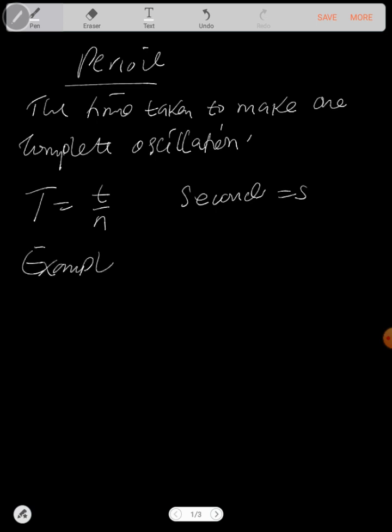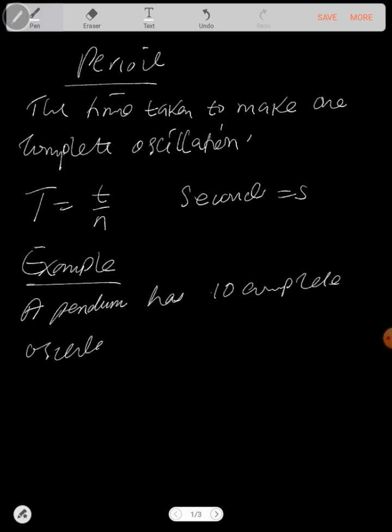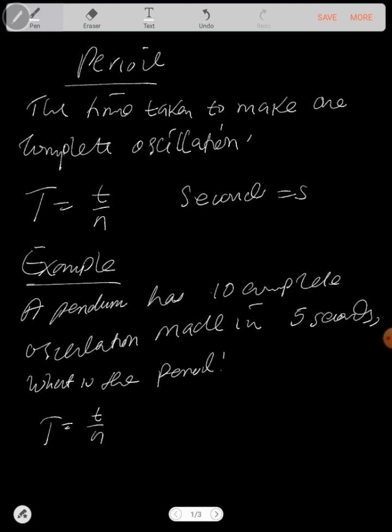You can look at an example. A pendulum has 10 complete oscillations made in 5 seconds. What is the period? Period equals time taken over number of complete oscillations. The time taken is 5 seconds, while the number of complete oscillations is 10. So this will give you 1/2, which gives you 0.5 seconds. That's how you find the period of the pendulum.